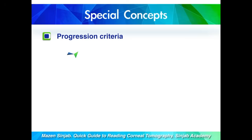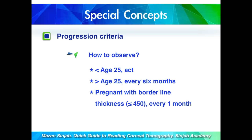How do we observe people with ectasia? When the patient is below 25 years old, we have to act — we consider it progressive and do not need to document progression. When the patient is above 25 years old, we have to document progression and observe every six months. This age cut-off is controversial; some doctors use 30, others use 20, depending on the environment and population. When the patient is pregnant with borderline corneal thickness — say less than 450 microns — we have to observe her every one month, because she may lose the chance to undergo cross-linking.